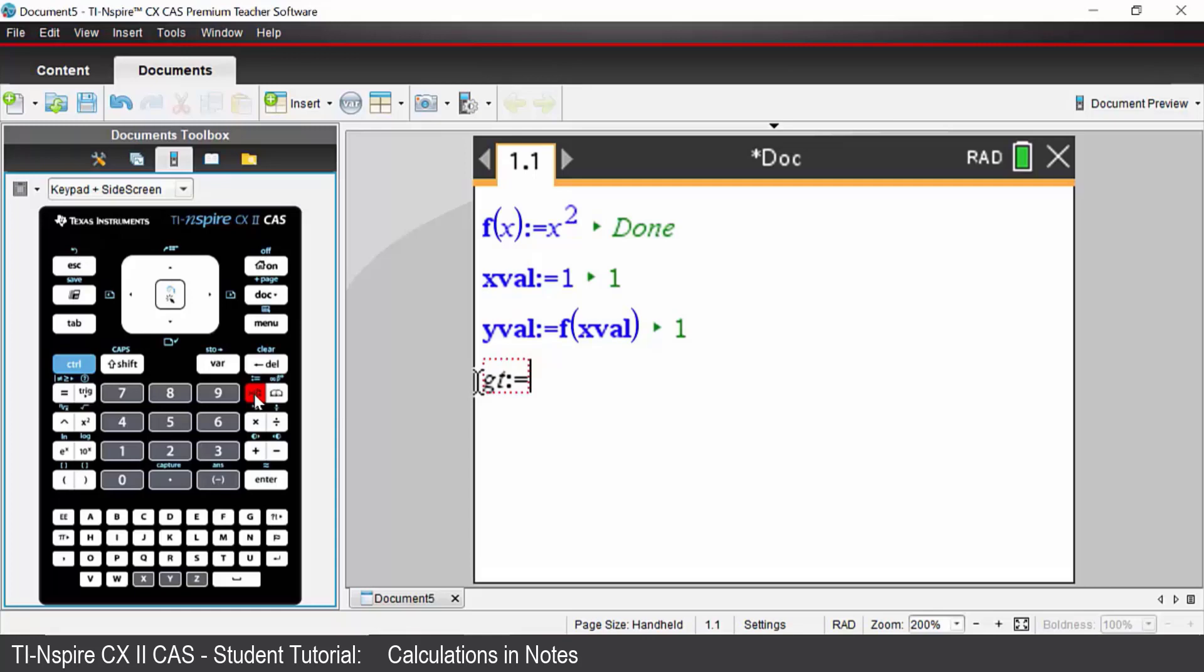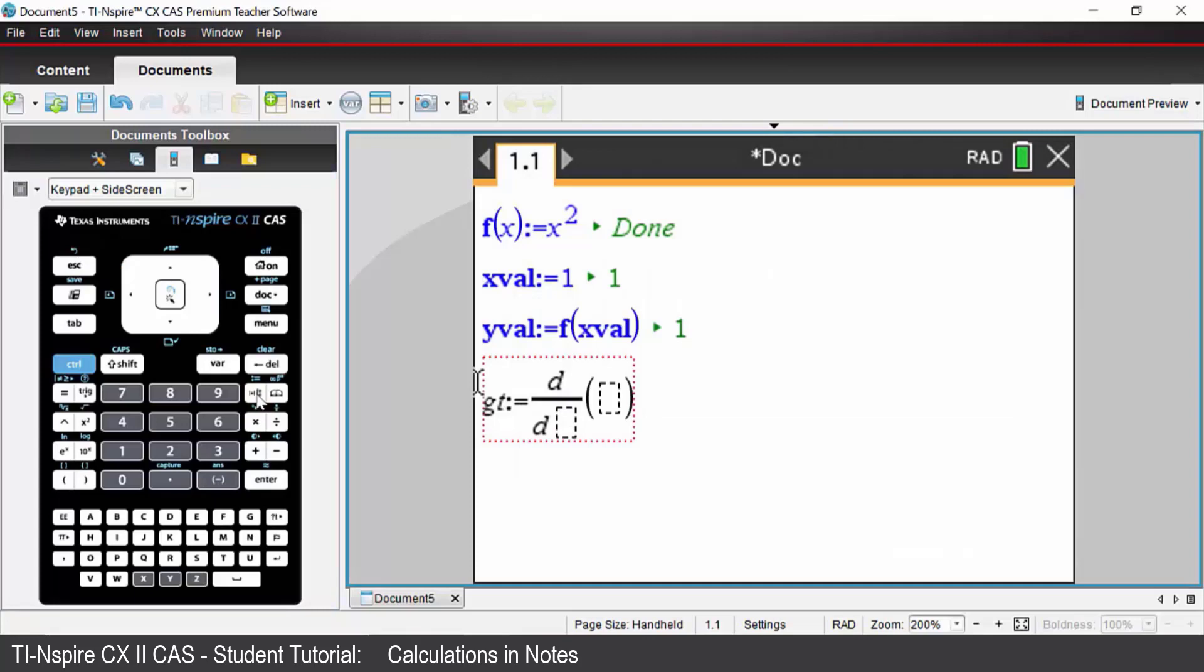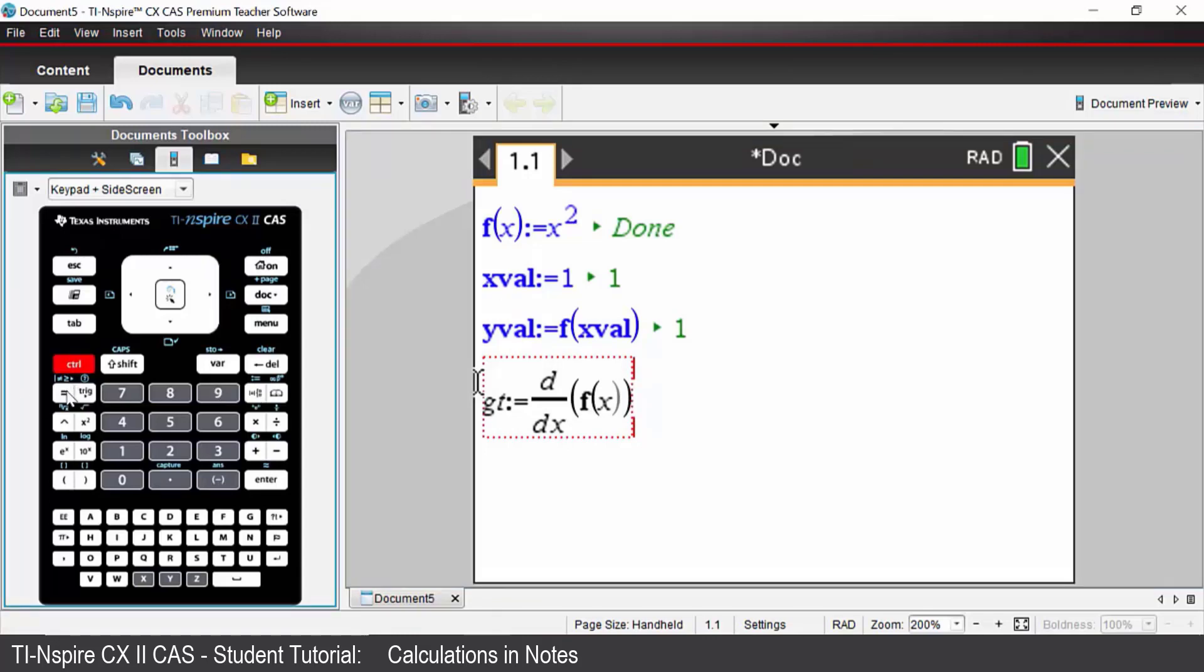To access the derivative we can press the math template and choose the derivative template. Our variable is x and we're differentiating with respect to x. We are differentiating our original function f of x and we are going to evaluate that so we need to put in our conditional command which is ctrl and equals.